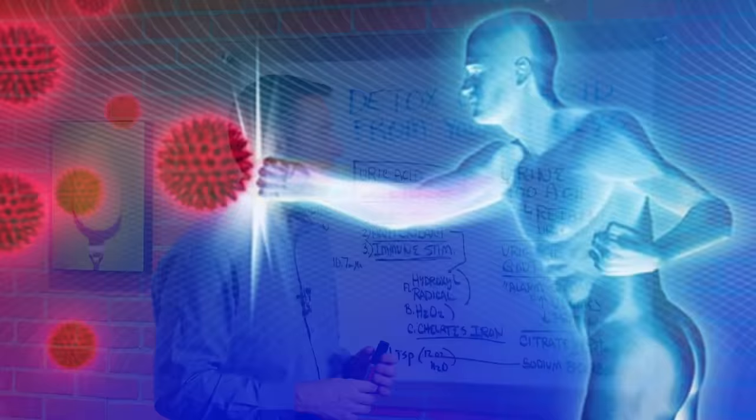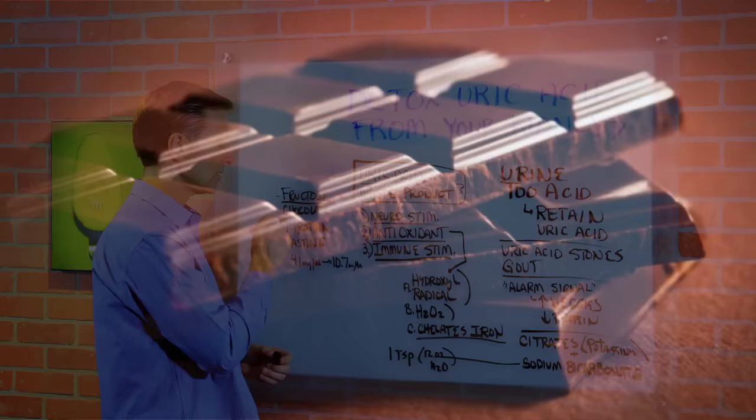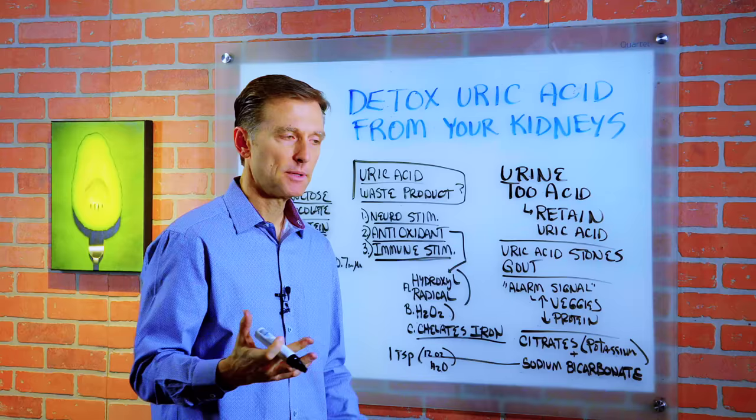And there's several ways that uric acid can build up in the body. Number one, fructose is one. Let's say you consume a lot of chocolate. Also, you can actually increase more protein. And even being on a high-carb diet and having pre-diabetes or even diabetes can increase your uric acid levels.